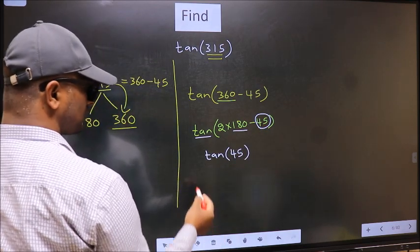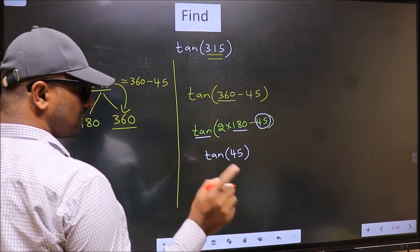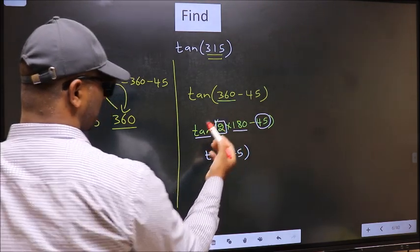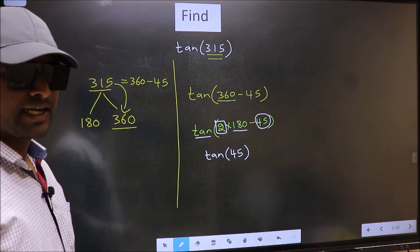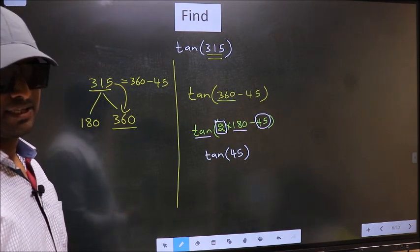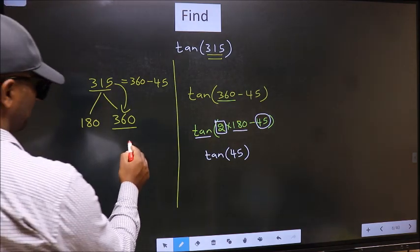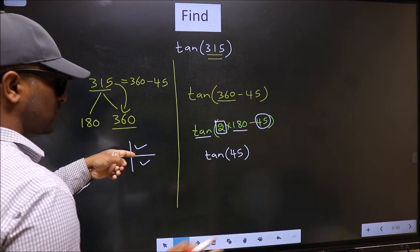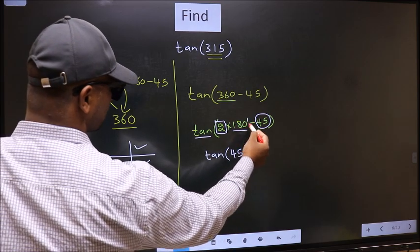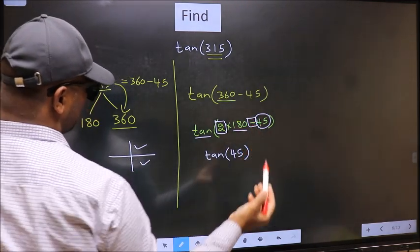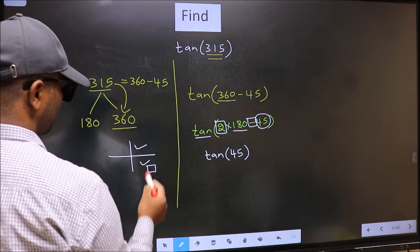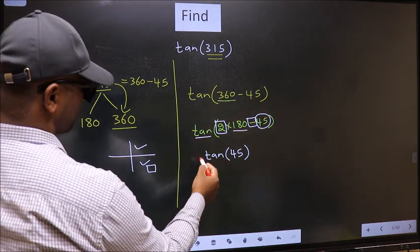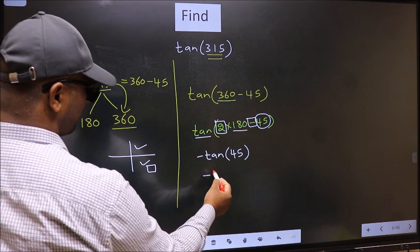Now the question is, will we get here plus or minus? To answer that, we should look at the number before 180. That is 2. And 2 is even. And all the even multiples of 180, they lie either in the first or in the fourth quadrant. So now to select the quadrant, we should look at this symbol. Here we have negative. That means angle lies in the fourth quadrant. And in the fourth quadrant, tan is negative. So we should put negative. So negative tan 45 is 1.